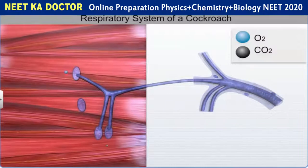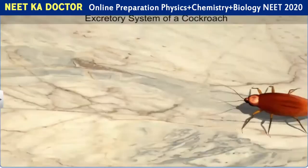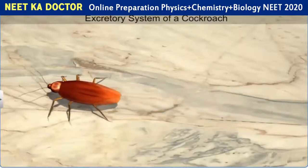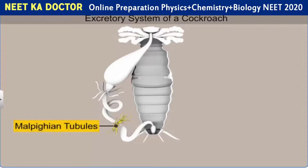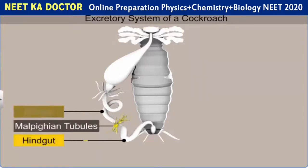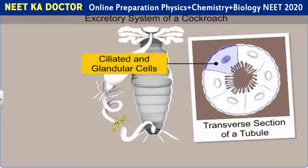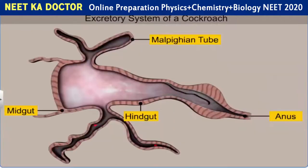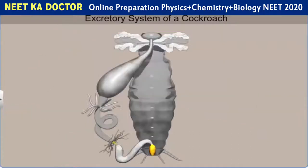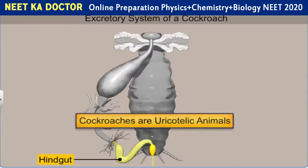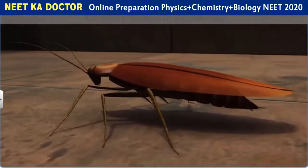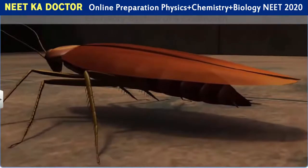Gaseous exchange in these tracheoles takes place through diffusion. The anatomical study also includes the excretory system. In cockroaches, malpighian tubules situated at the junction of the mid-gut and hindgut serve as excretory organs. Each tubule is lined with ciliated and glandular cells which absorb nitrogenous wastes from the body and convert them into uric acid. This uric acid is then excreted through the hindgut. As cockroaches excrete uric acid, they are known as uricotelic animals. Apart from malpighian tubules, the fat body, nephrocytes and uricose glands also help in excretion.